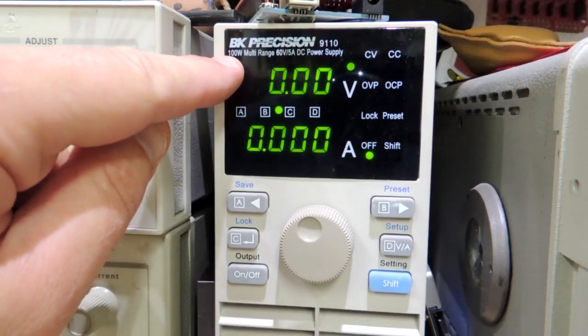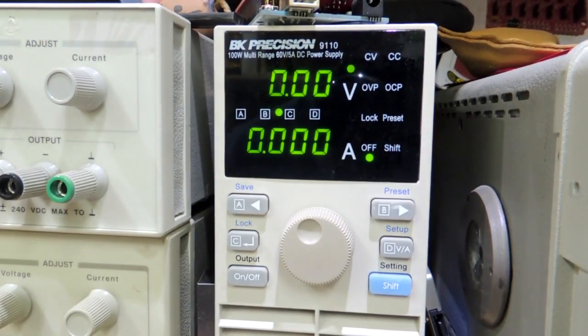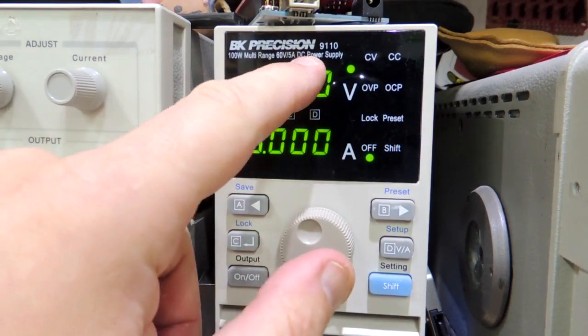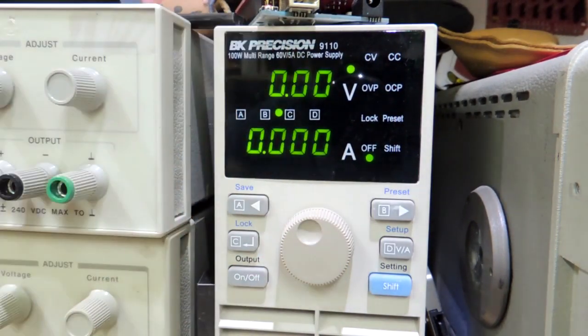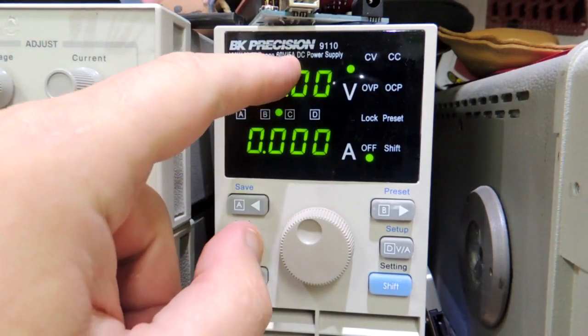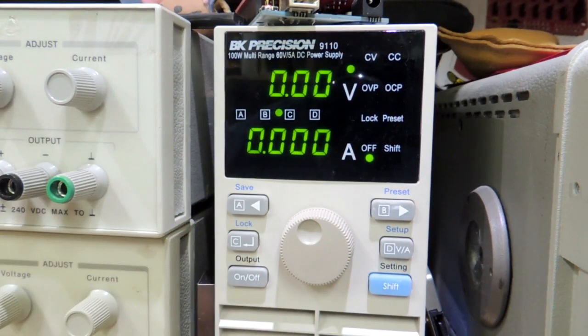Some good things about the supply: it's a 100-watt supply, so that's plenty of power for bench work. It goes up to 60 volts or 5 amps. Of course you can't have both, because that would be 300 watts. But the 60 volts does definitely find some use occasionally, and I must say I appreciate it, and the 5 amps as well.